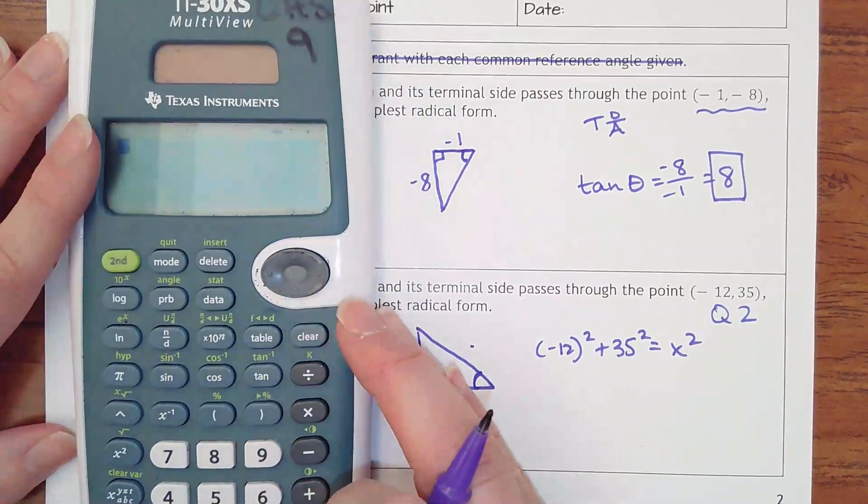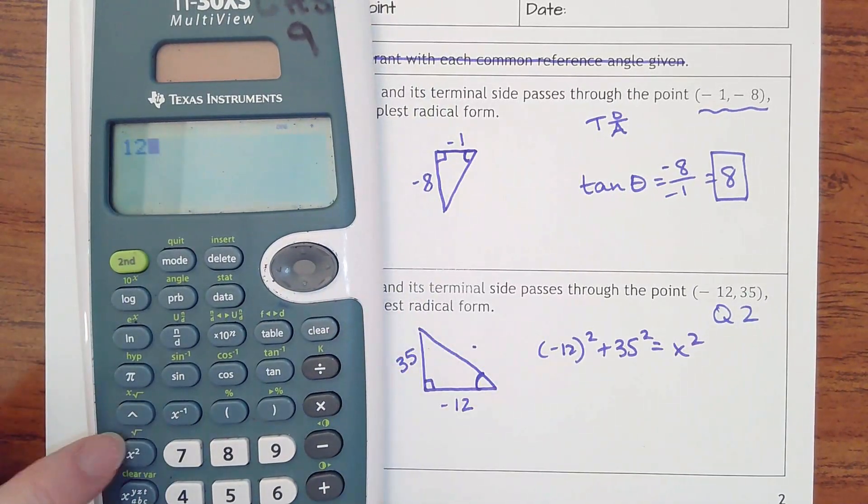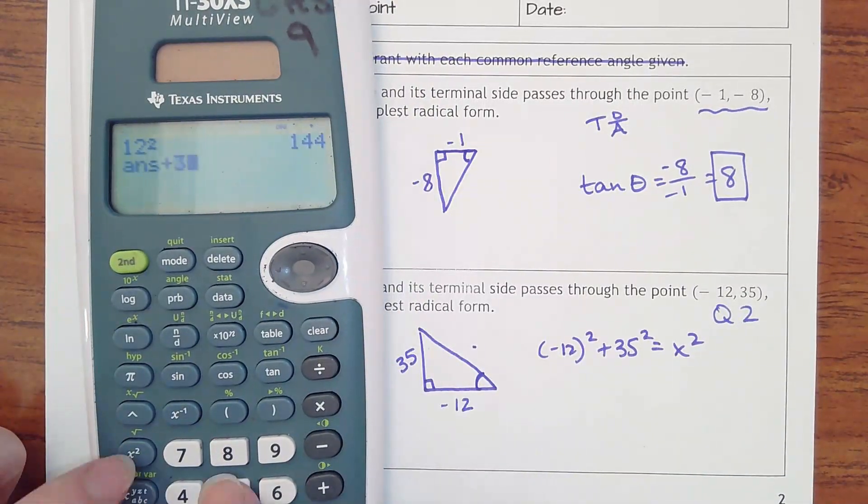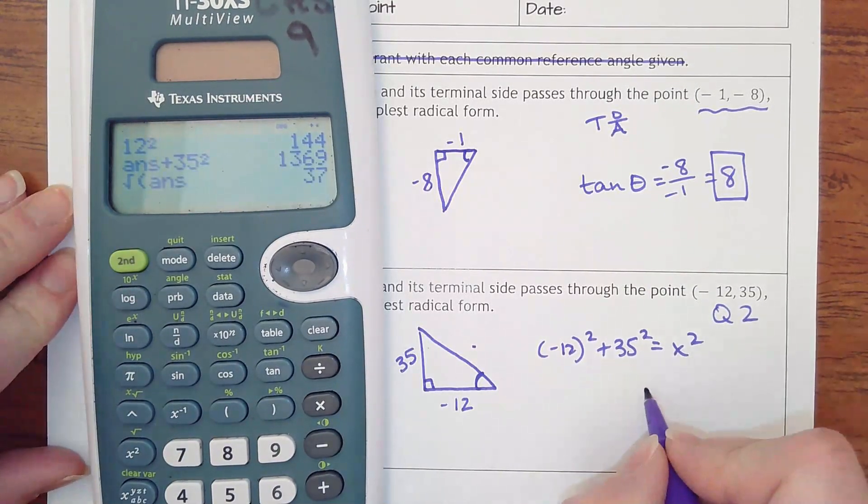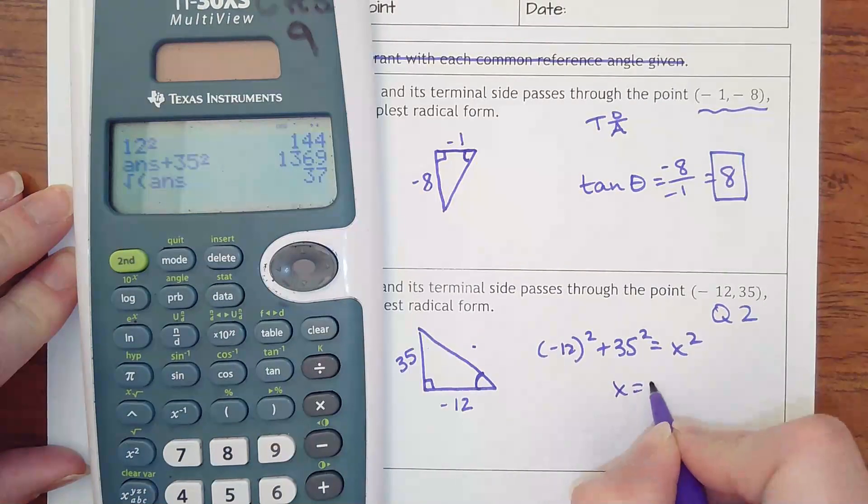I'm not even going to do the negative. I just know 12² is 144 plus 35², and then square root of that. Luckily that comes out to be 37.